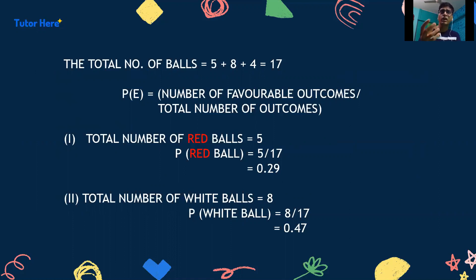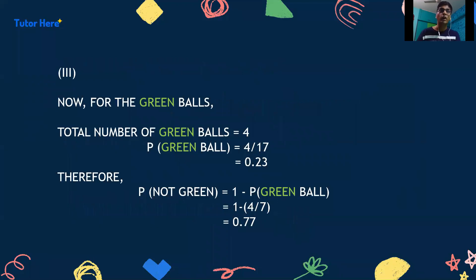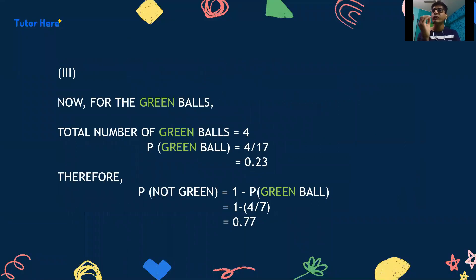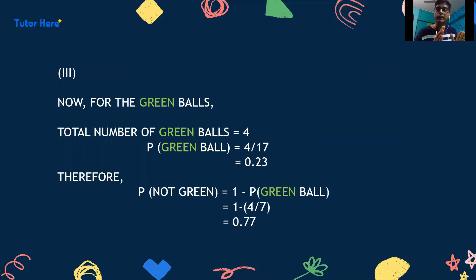Now, what is the probability that the marble taken out will not be green? The total number of green balls is 4, so the probability of getting a green ball is 4/17, which is approximately 0.23. But we want the probability of not getting a green ball. Using complementary events, the sum of complementary probabilities is 1. Therefore, the probability of not getting a green ball is 1 minus 4/17, which equals 13/17, or approximately 0.77.